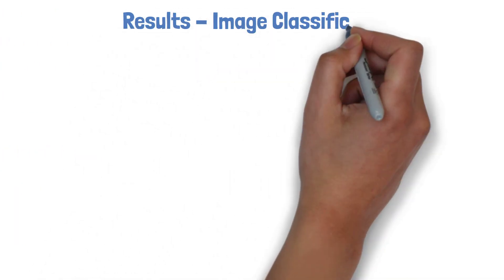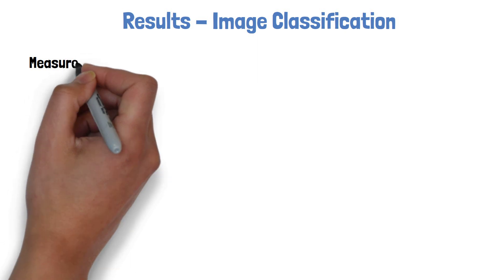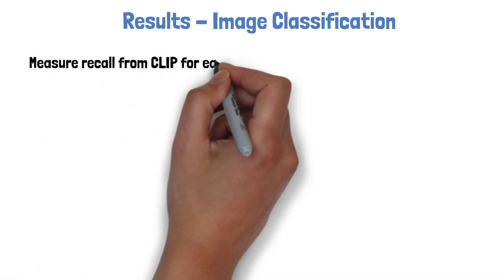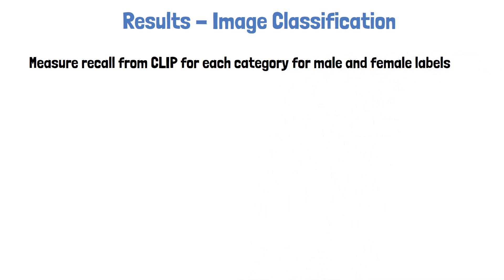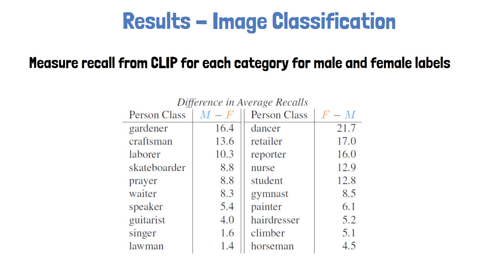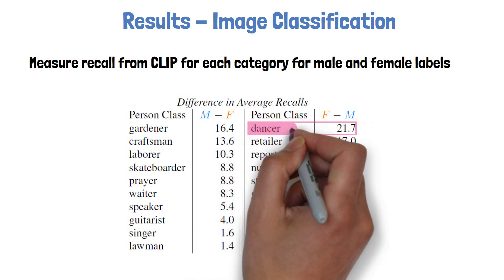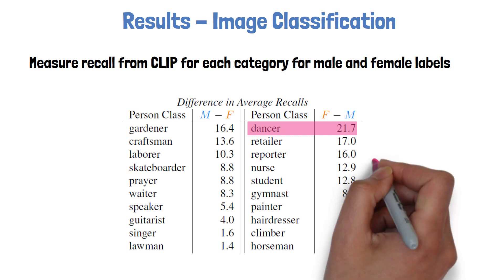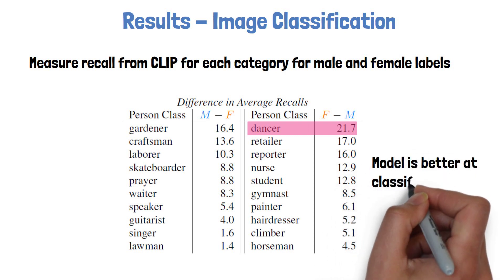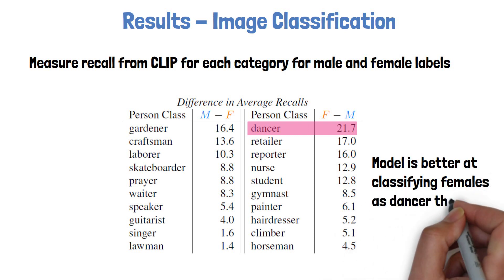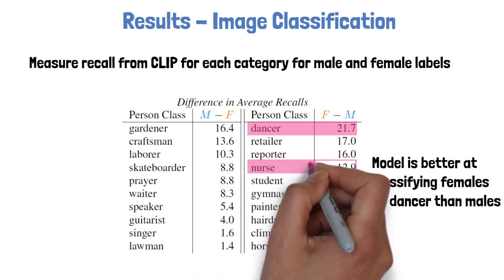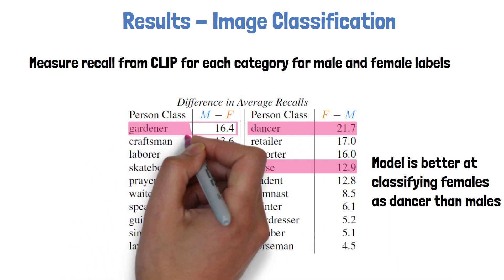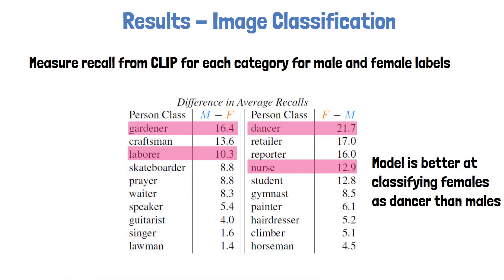Let's now take a look at some results from the paper. Starting with image classification, the researchers calculated recall from CLIP, an image and text model from OpenAI that can be used for zero-shot image classification. The recall was calculated for each category for male and female labels. An interesting observation is that CLIP performed more than 20% better at classifying the 'dancer' class for female dancers compared to male dancers. Another disparity is better performance for female nurses, being more than 10% better. On the other side, CLIP did a better job classifying male gardeners and male laborers.